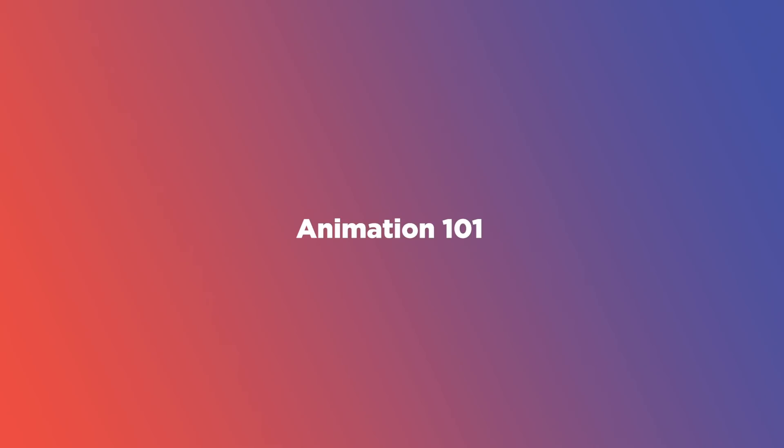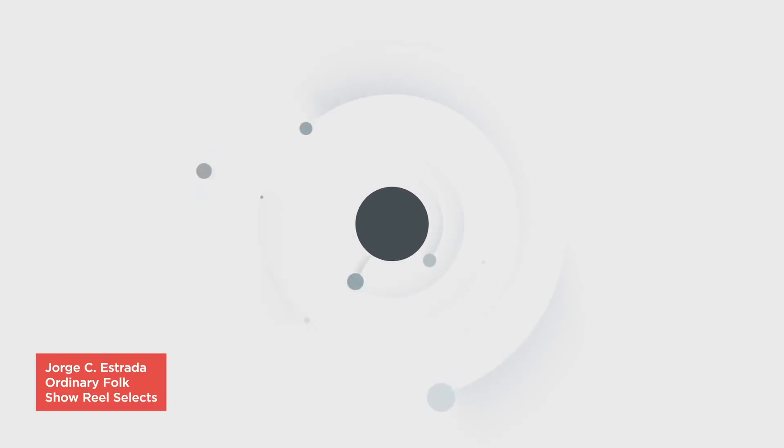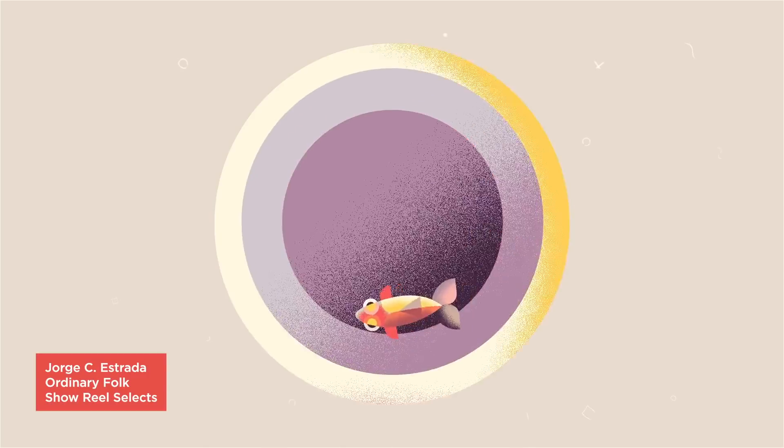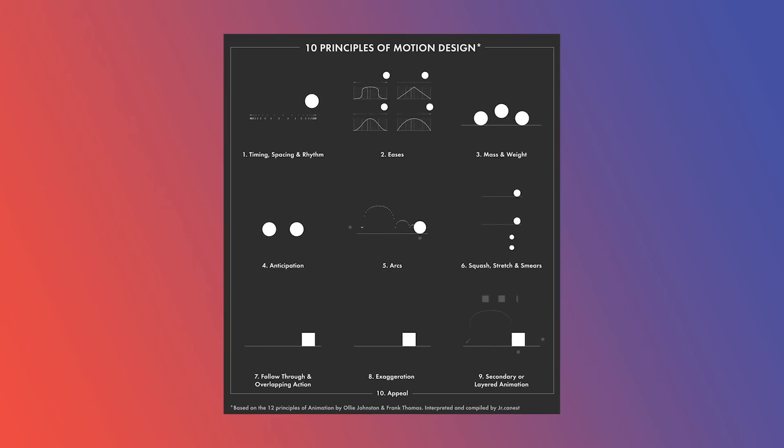Artists who want to start incorporating motion into their work often fall prey to the idea that the tool you use is the most important thing. Animation is an art, and there are principles behind that art. Often, animators are taught that there are 12 principles of animation, but a bunch of those only apply to hand-drawn or character animation. One of the best After Effects animators out there is Jorge Estrada, who runs Ordinary Folk in Vancouver. He came up with 10 principles of animation geared towards motion designers, and I want to teach you three of these principles.